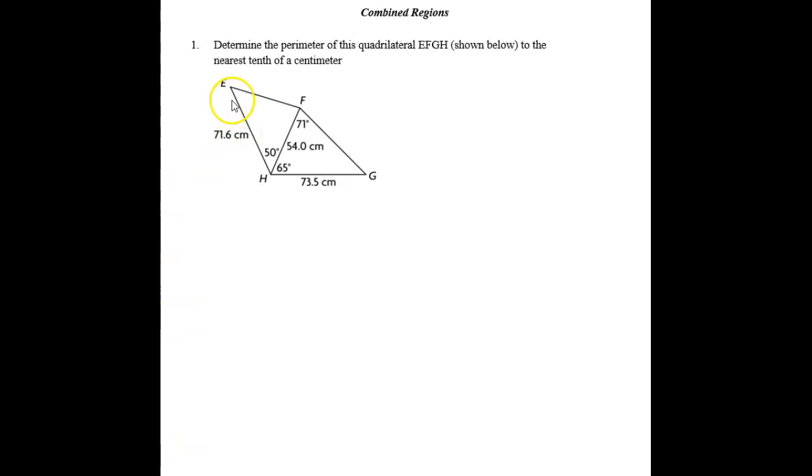Combined regions. In these types of questions, we'll have two triangles, so you need to pick out the information from each triangle that you have and decide whether to apply the law of sine or law of cosine, and in many cases, both. So determine the perimeter of this quadrilateral EFGH shown on the diagram.